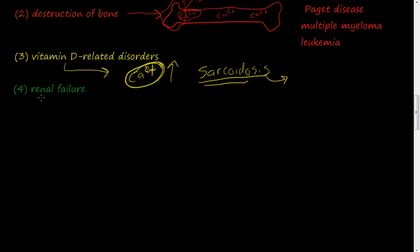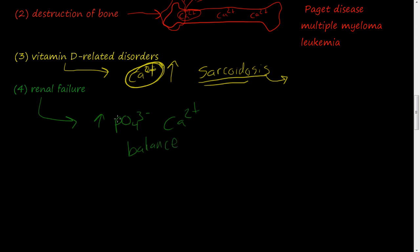In the case of renal failure, it can cause increased phosphoric acid, and that will increase the calcium by default, because there has to be some kind of calcium and phosphate balance. When you have an increase of one, you're going to have an increase of the other, and if you have a decrease of one, you're going to have a decrease of the other. So there is a phosphate-calcium balance within the body. If you have renal failure and you reabsorb too much phosphate, then you're also going to have a corresponding increase in calcium.